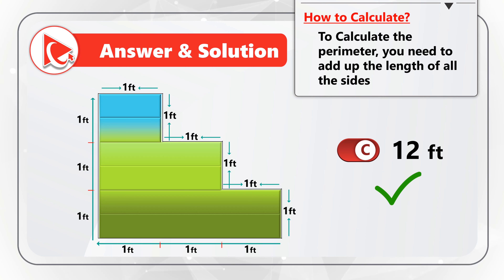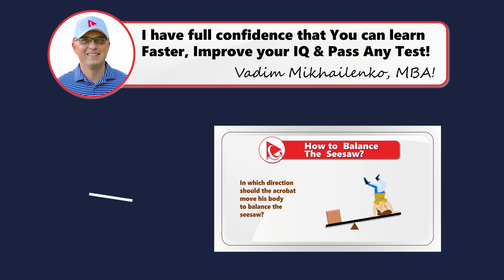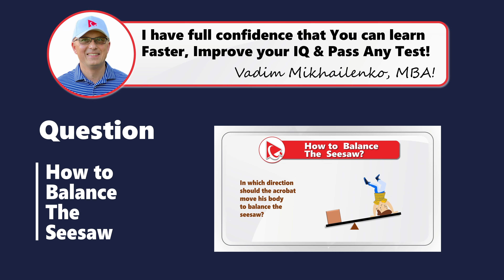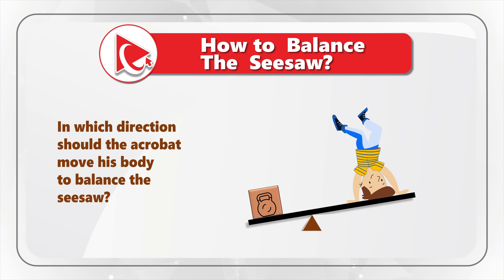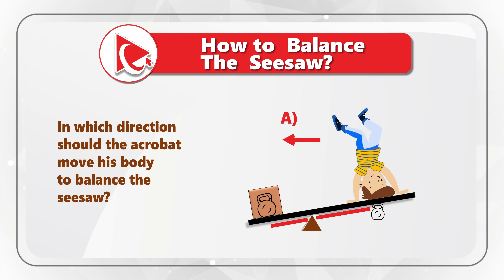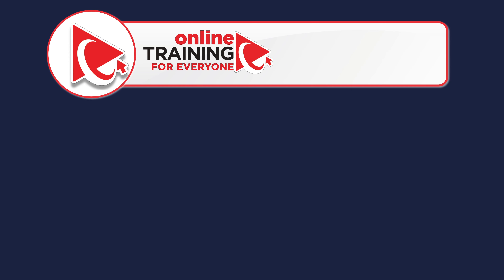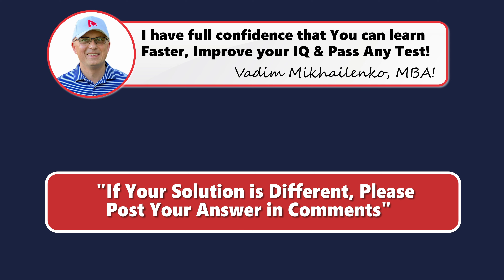Did you get to the same answer? If not, please make sure to post your solution and rationale in comments. And now I have a question for you to practice your skills. You are presented with a seesaw. On the left there is a weight, and on the right side there is an acrobat. You need to determine in which direction the acrobat should move his body to balance the seesaw — Choice A: to the left, or Choice B: to the right. Post your answer in comments so I can give you my feedback.